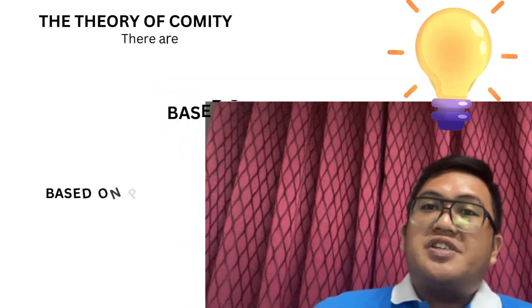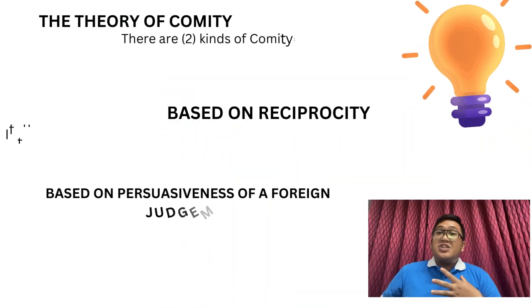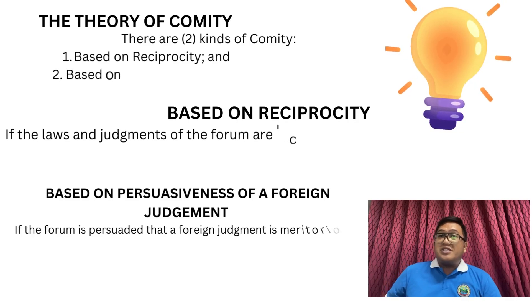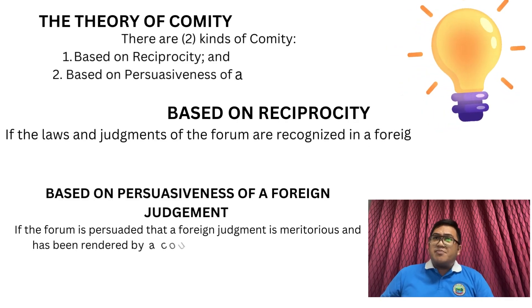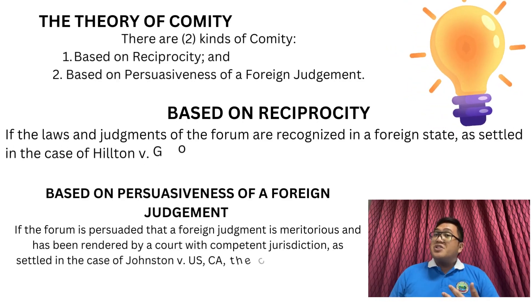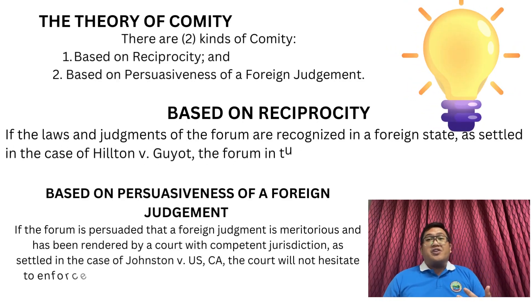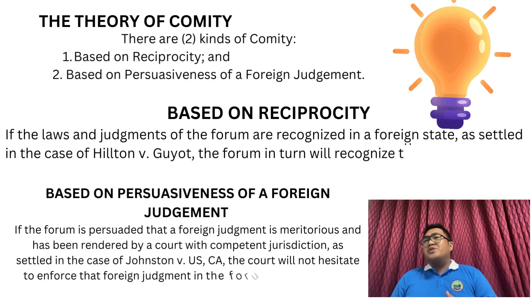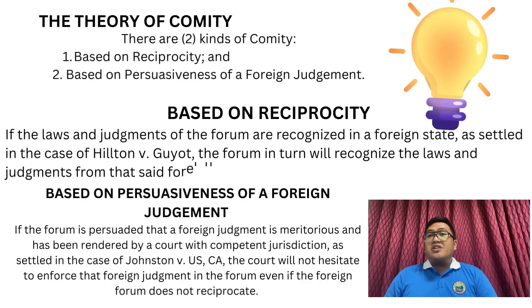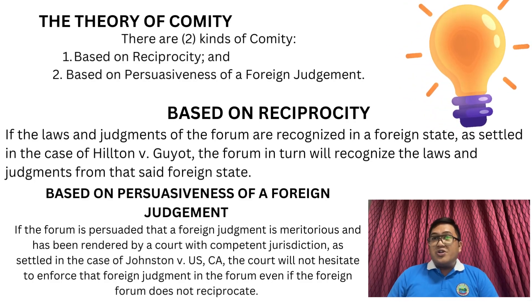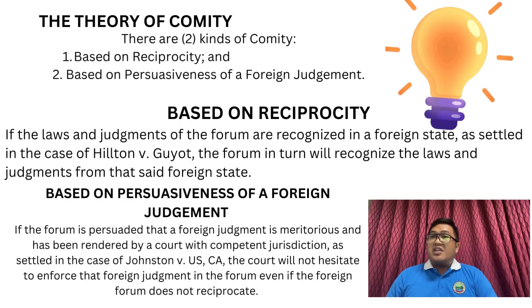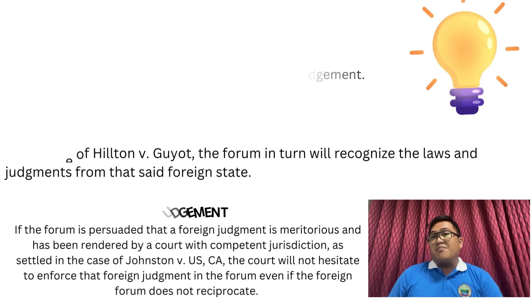One of the theories in the application of foreign law is the theory of comity, which has two kinds. First, based on reciprocity: if the laws and judgments of the forum are recognized in a foreign state, then the forum, in turn, will recognize the laws and judgments from that foreign state. Second, based on persuasiveness of foreign judgment: if the forum is persuaded that the foreign judgment is meritorious, then the court will not hesitate to enforce that foreign judgment, even if the forum does not reciprocate.